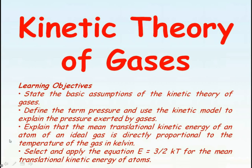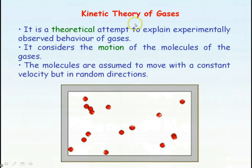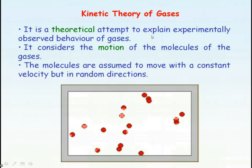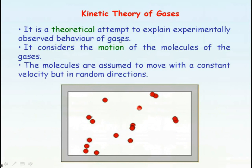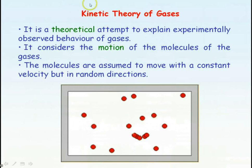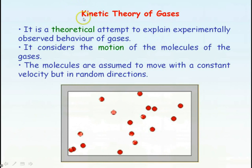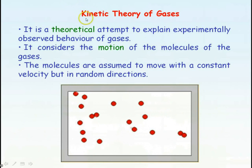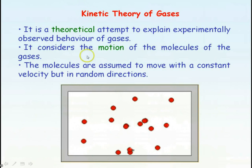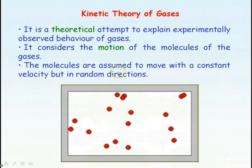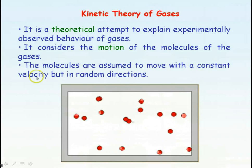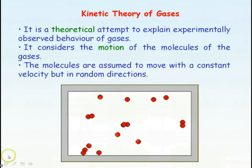We're going to be looking at the kinetic theory of gases. The kinetic theory of gases is a theoretical attempt to explain the behaviour of gases that has been observed experimentally. The word kinetic implies that we're going to be looking at the motion of the gas molecules. One of the assumptions we make about the motion of the gas molecules is that they're moving at a constant velocity, but in random directions.